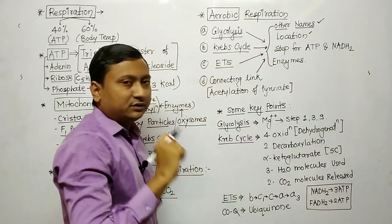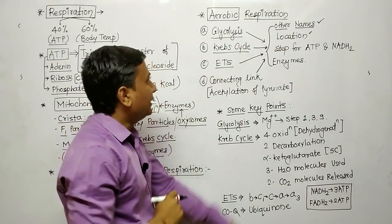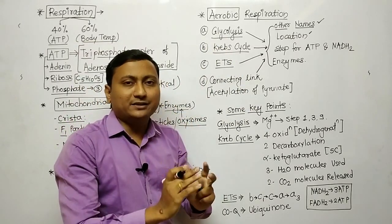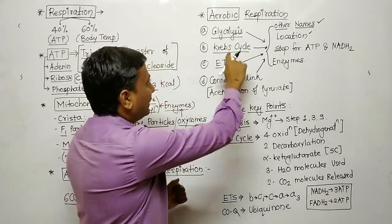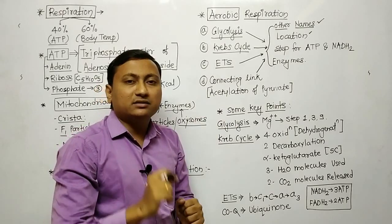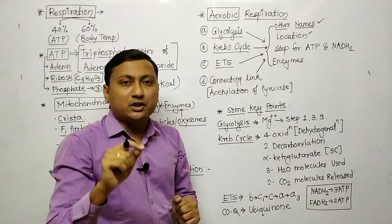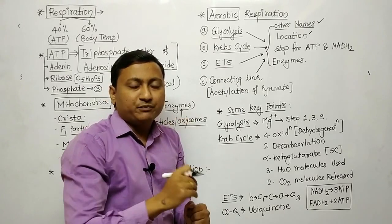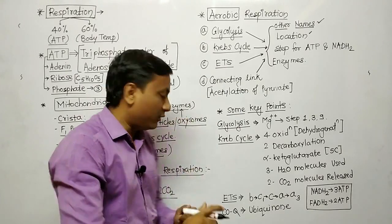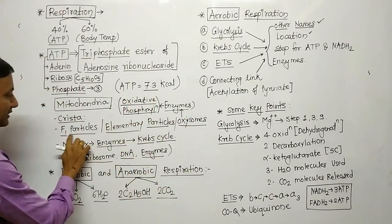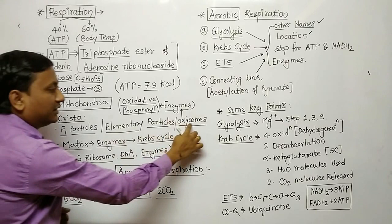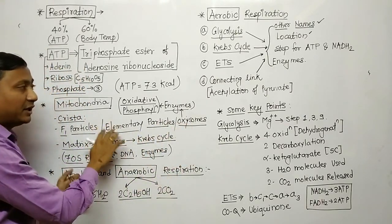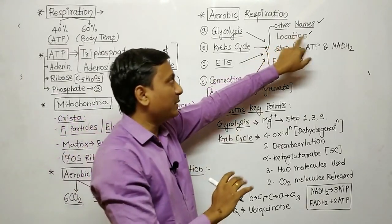The location of each pathway is important. Glycolysis occurs in the cytoplasm. The Krebs cycle occurs in the mitochondrial matrix. ETS is carried out on the surface of F1 particles, also called elementary particles or oxizomes, which are present on the inner mitochondrial membrane. Prepare these locations.